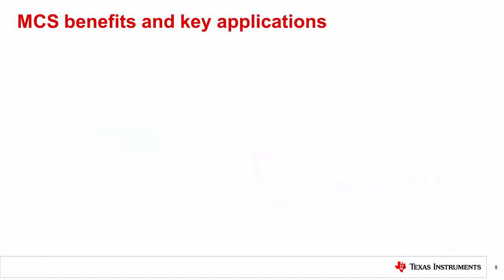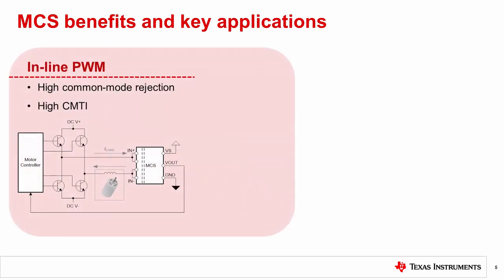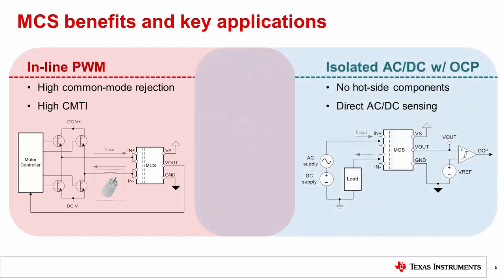The integration of an in-package MCS provides inherent system level benefits, especially in certain key applications. For example, as shown on the left, MCS devices are well suited to in-line pulse width modulated current sensing, such as in brushless DC motor control circuits. Since the system quickly switches between high voltages, the high common mode rejection ratio and high common mode transient immunity, CMTI, of MCS devices ensures accurate operation.